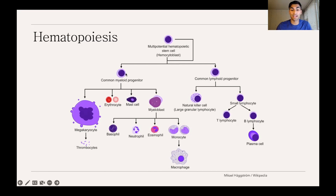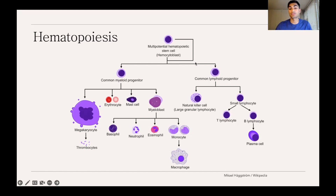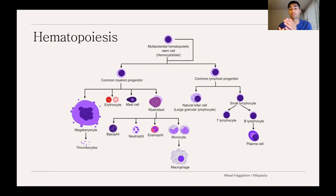Within the myeloid side of the family tree, cells can further develop into megakaryocytes, which result in thrombocytes or platelets; erythrocytes, which are red blood cells; mast cells; and myeloblasts, which further divide into basophils, neutrophils, eosinophils, and monocytes. On the lymphoid side, cells divide into natural killer cells or small lymphocytes, which further become either T lymphocytes or B lymphocytes — important for classifying lymphoid leukemias.